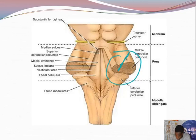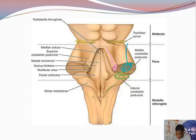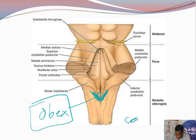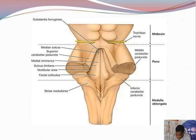We have three cerebellar peduncles: the middle cerebellar peduncle — the largest — connects to the pons; the superior cerebellar peduncle goes upward to the midbrain; the inferior cerebellar peduncle connects the cerebellum to the medulla. The cerebellar peduncles generally attach the cerebellum to the brainstem. Finally, there is the obex — the terminal point of the fourth ventricle where it narrows into the central canal of the medulla and spinal cord.